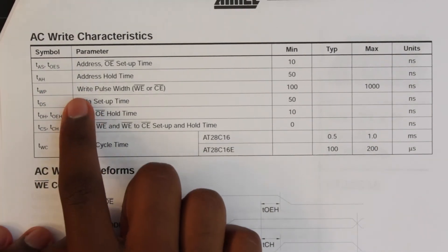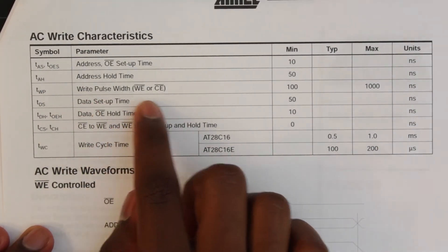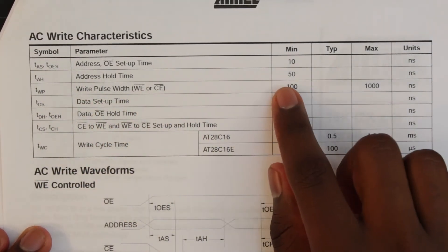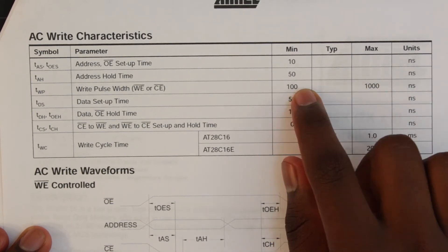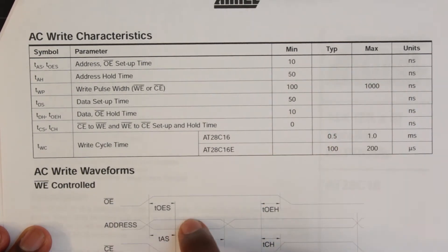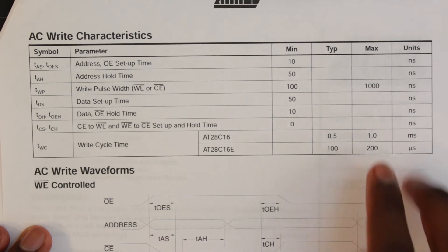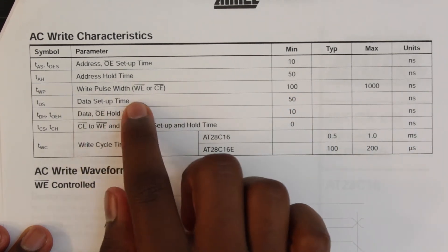Taking a look at the AC write characteristics, we can see that the write pulse width needs to be in between 100 and 1000 nanoseconds. This is the pulse width to say that we want to write a value to the EEPROM. That's not a lot of time and our typical push button switch won't work for this.